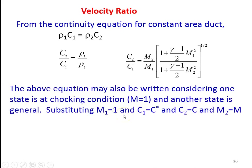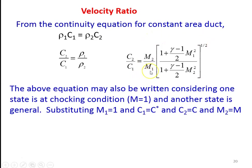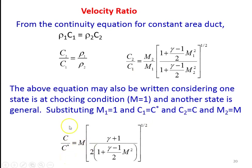The above equation can be rewritten for the choking condition. For choking condition, Mach number equals 1. We substitute one Mach number to 1 and keep the other Mach number in the general state — M1 = 1, so C1 becomes C* and we take C2 = C, M2 = M. Rearranging, C/C* = M × [(γ+1)/2 / (1 + (γ−1)/2 × M²)]^(1/2), where C is any velocity and C* is the velocity at the choking condition.